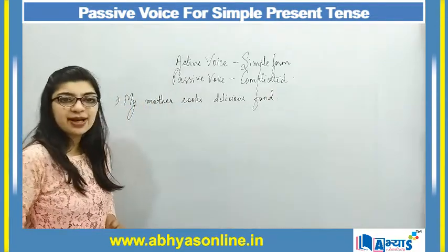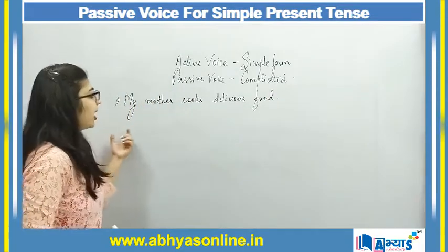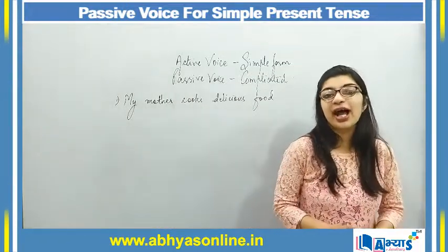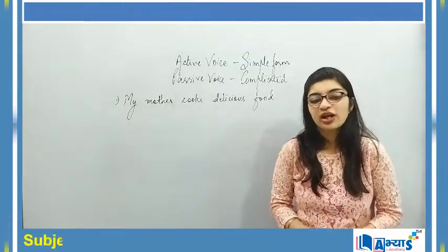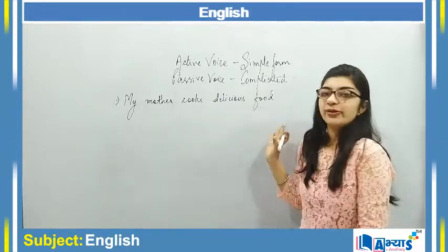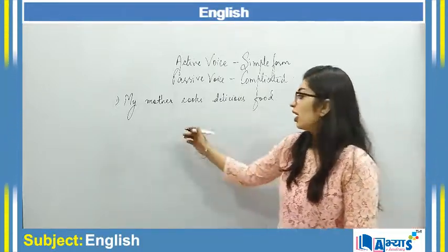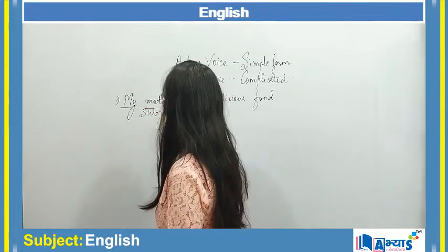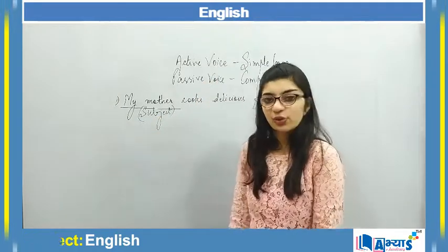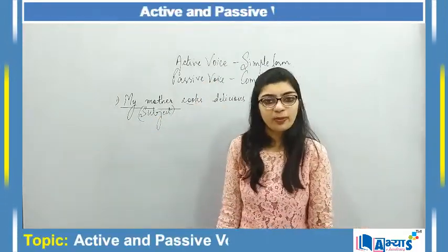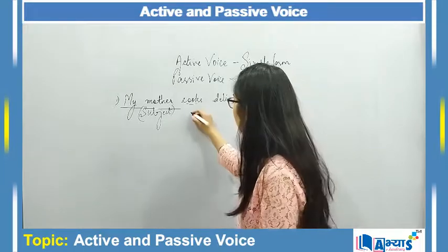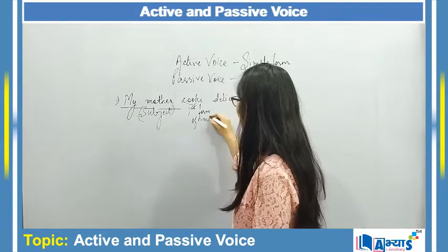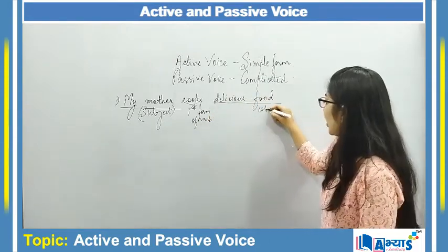If I consider the example 'My mother cooks delicious food,' we discussed that when a sentence is in active voice it takes the simplest form. We will see that 'my mother' is the subject because our sentence starts from the subject. 'Cooks' is the simple, meaning first form of the verb, and 'delicious food' is the object.